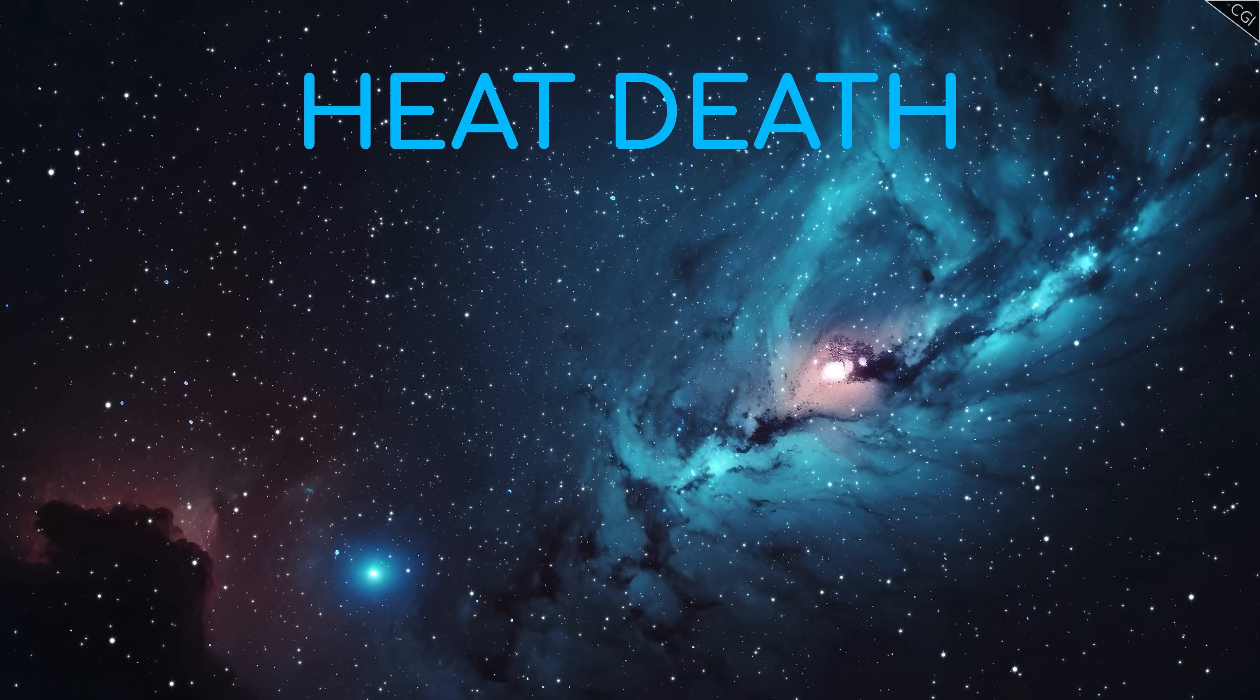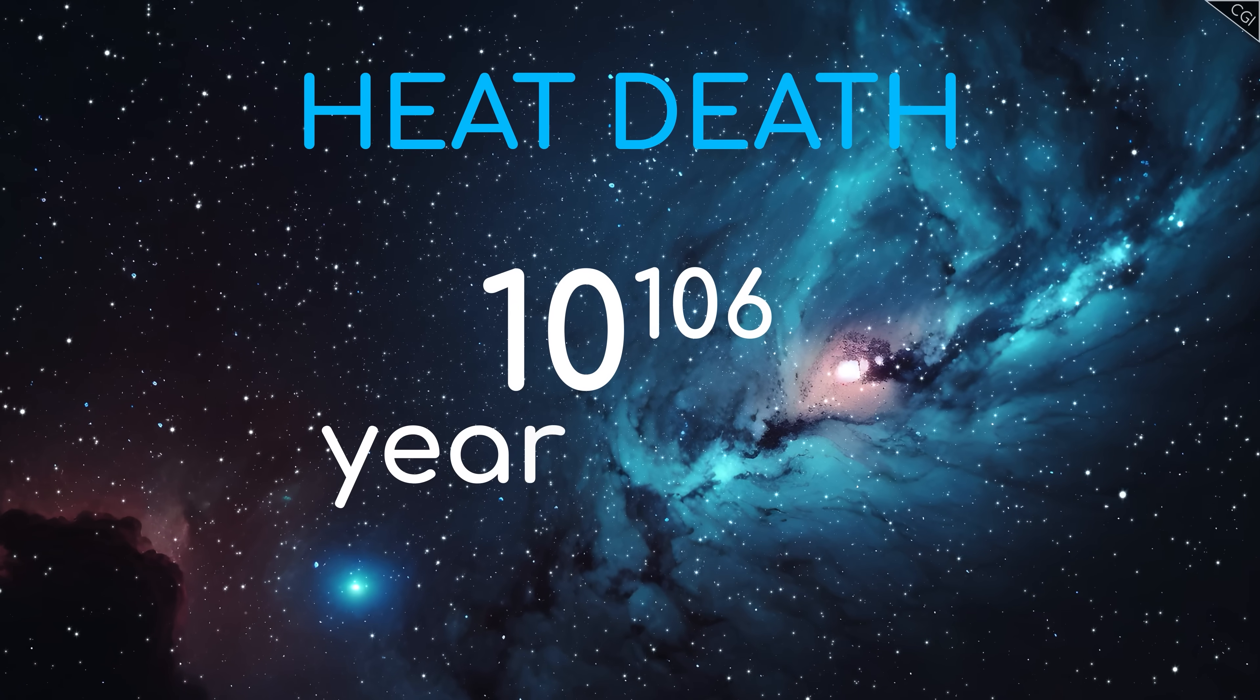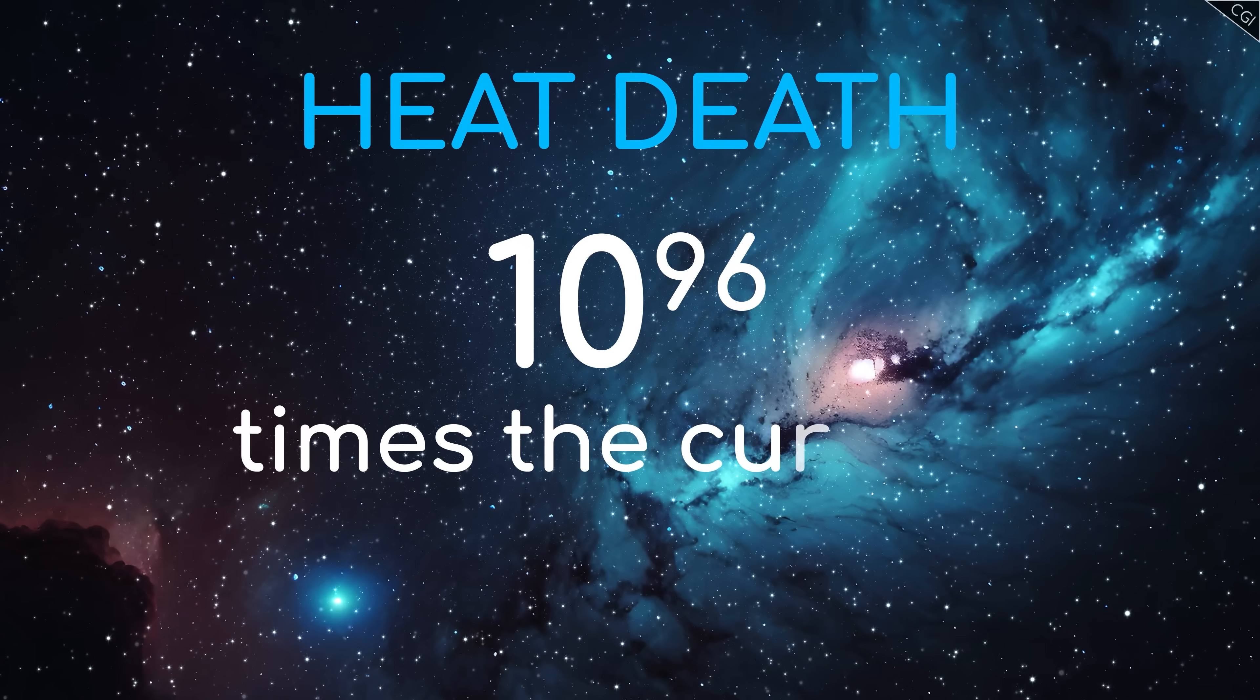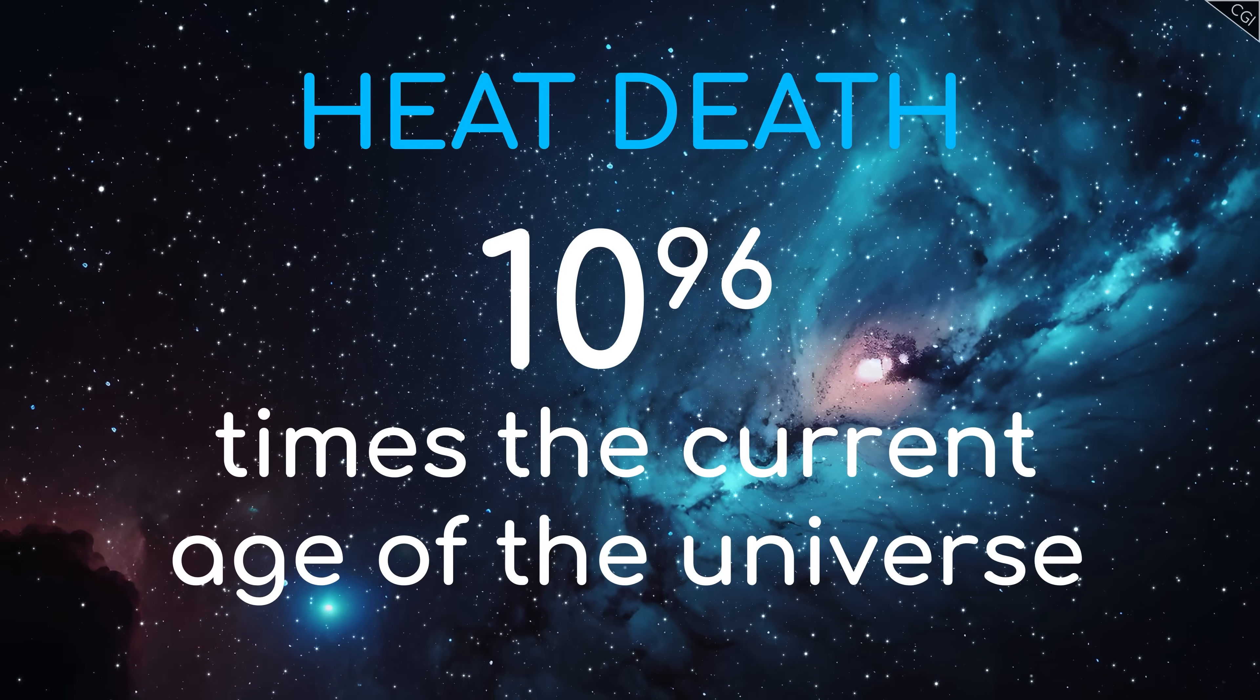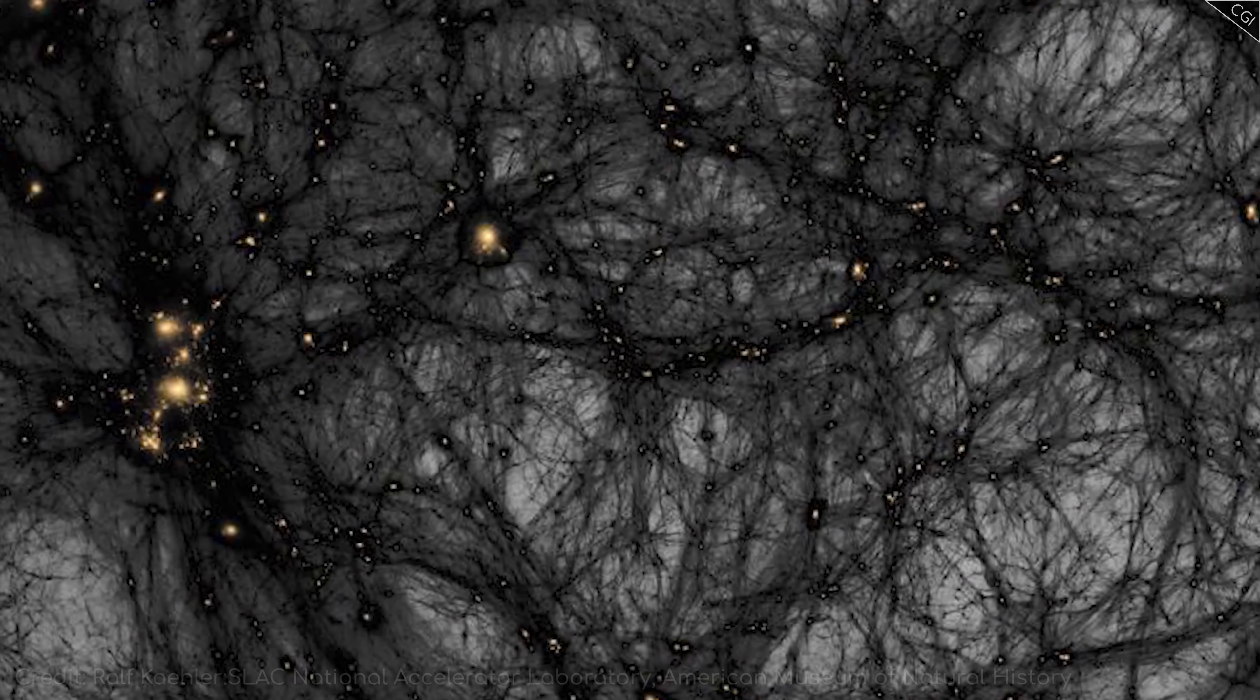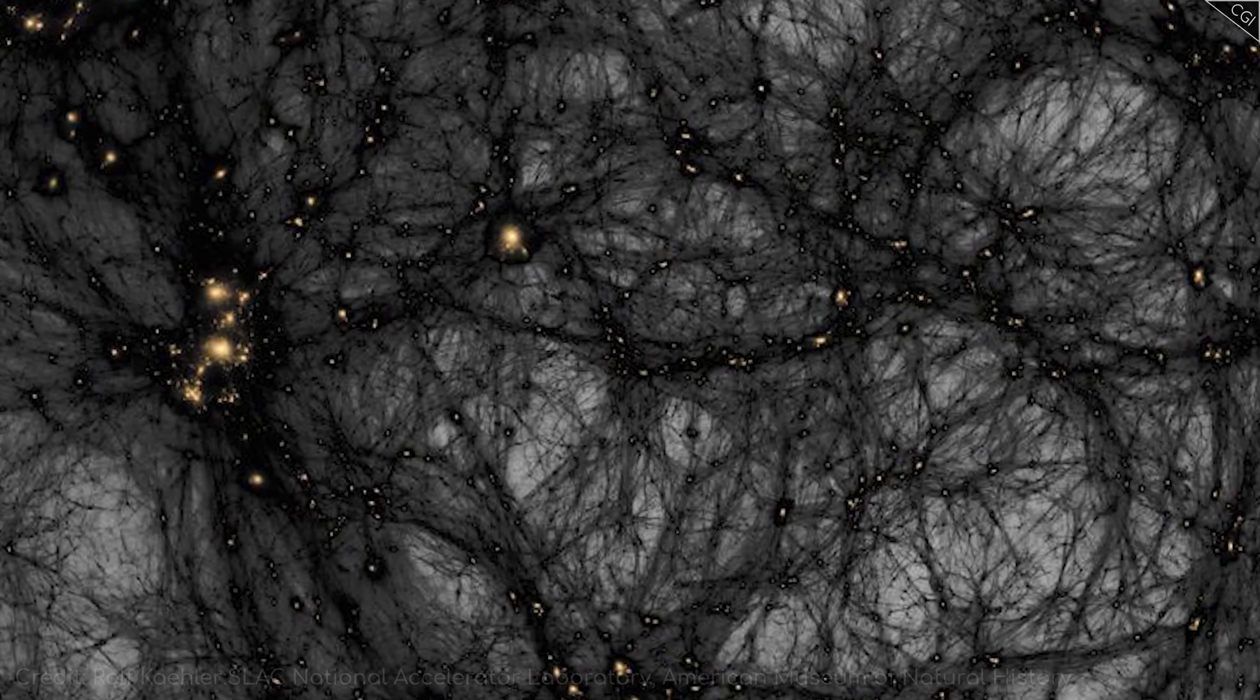Admittedly, it might take a while to reach heat death. Some estimates place it at 10 to the power 106 years away, or 10 to the power 96 times the current age of the universe. But if dark energy really comes from a perfectly stable vacuum, then there will be no avoiding it. Heat death is coming.